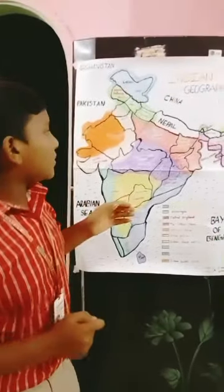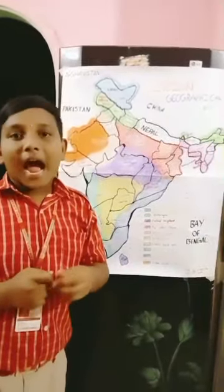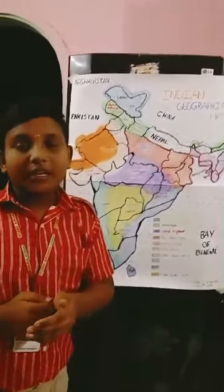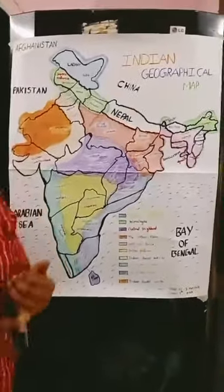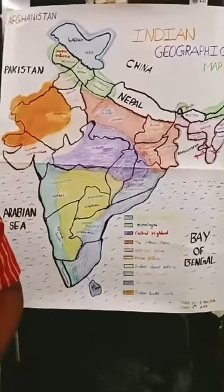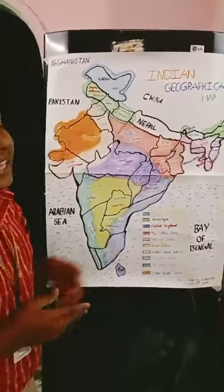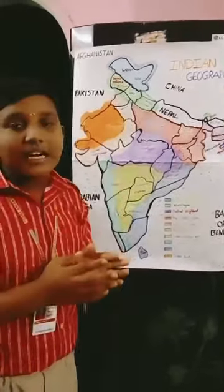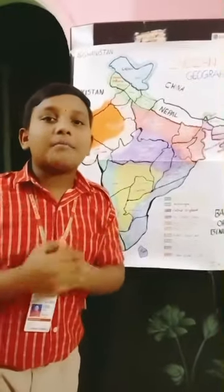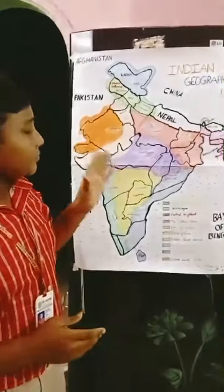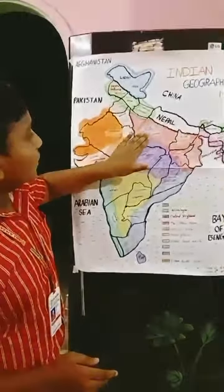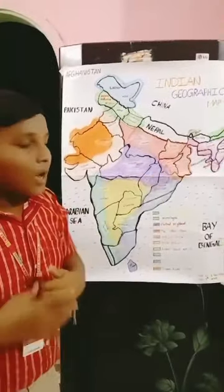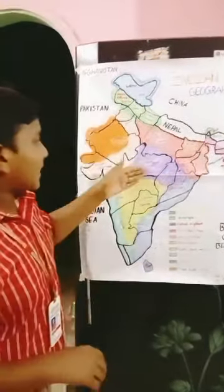Coming to the point of Northern Plains. Northern Plains are the plains where the alluvial deposits of three major river systems — Indus, Ganga, and Brahmaputra — are included here along with their tributaries. The plains are very fertile for agriculture and other things. These are located at Uttar Pradesh, Bihar, Jharkhand, and partly West Bengal.